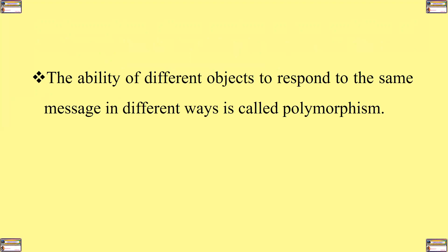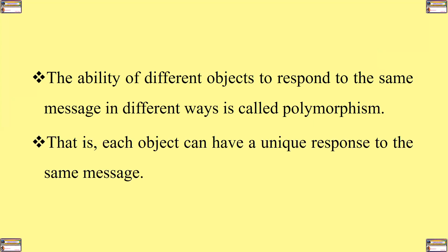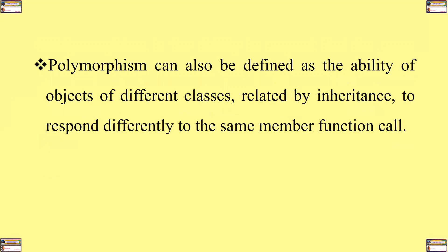The ability of different objects to respond to the same message in different ways is called polymorphism — that is, each object can have a unique response to the same message. Polymorphism can also be defined as the ability of objects of different classes, related by inheritance, to respond differently to the same member function call.